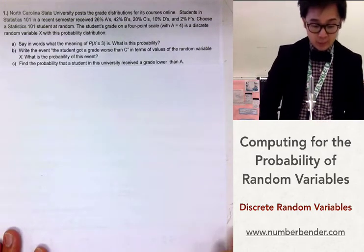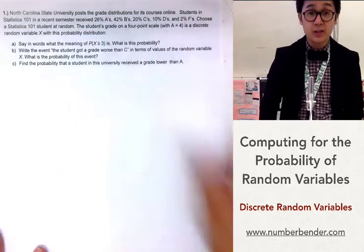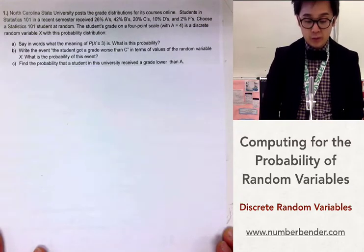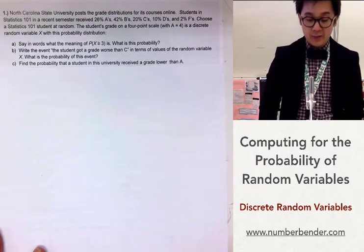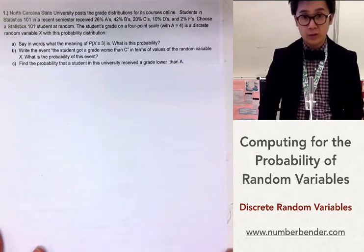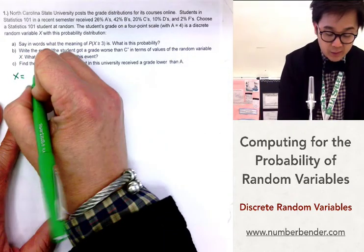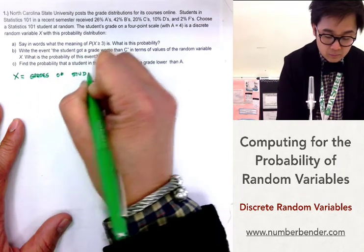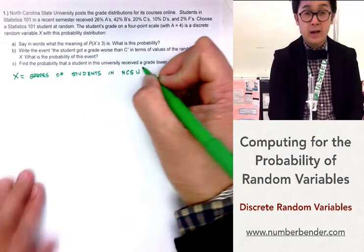In problem number one from North Carolina State University, the distribution of grades for Statistics 101 is given. Students getting an A at this university is about 26%, a B is 42%, and so on. We're going to be answering probability questions on A, B, and C given the distribution of grades from A through F, where A equals 4 as our random variable x, which represents the grades.